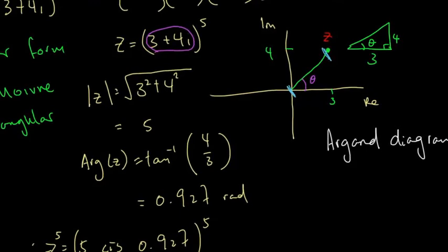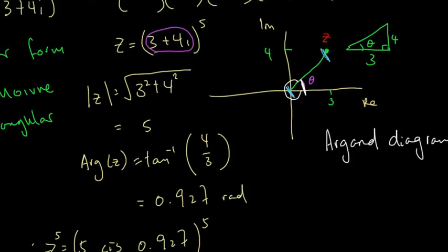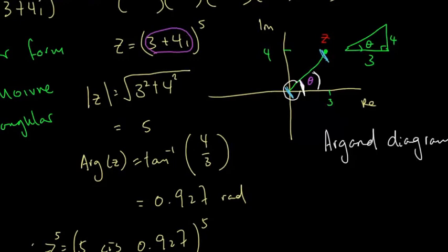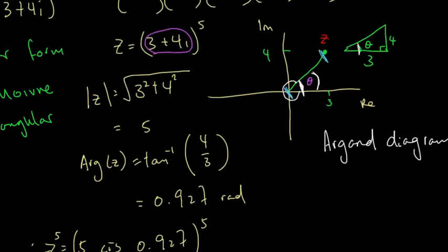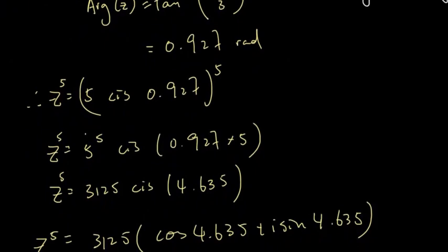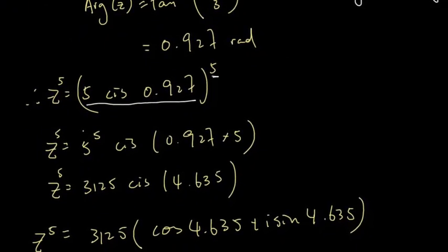You need to find angle θ. For convenience, calculate the positive angle. Just like any triangle, if θ is the angle you need, then tan⁻¹(4/3) gives you that angle. The modulus comes from the Pythagorean theorem: √(3² + 4²) gives the radius. Once you have the polar form raised to the power of 5, apply De Moivre's theorem.